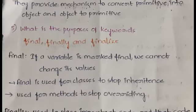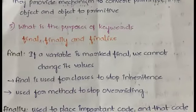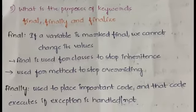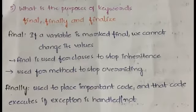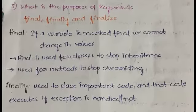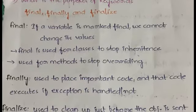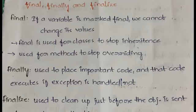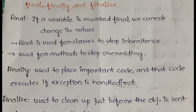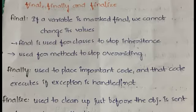The next question is: what is the purpose of the keywords final, finally, and finalize? They are a bit confusing, but let's try to understand them clearly. First is 'final' — if a variable is marked as final, we cannot change its value. For example, if final a = 10, then the value remains 10 throughout the entire program.